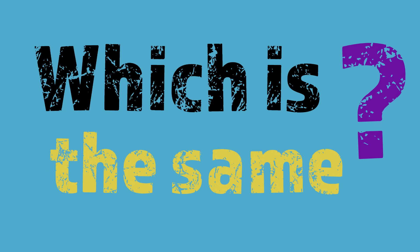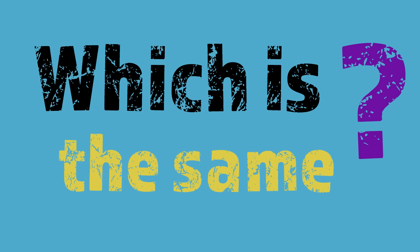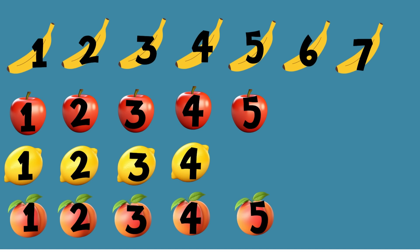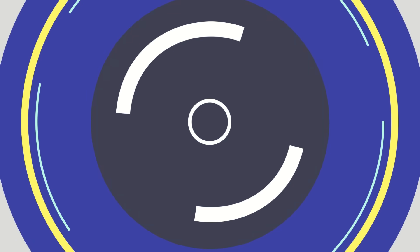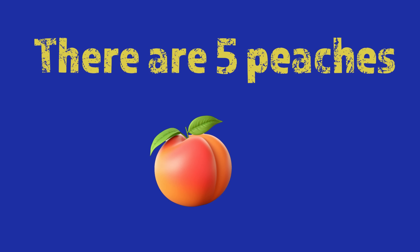There are seven bananas, five apples, four lemons, and five peaches. Which group of fruits has an equal amount? Which group is the same? You guessed it — the apples and peaches have an equal amount. There are five apples and there are five peaches.